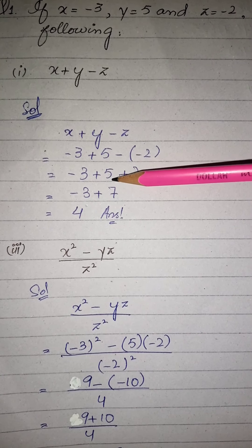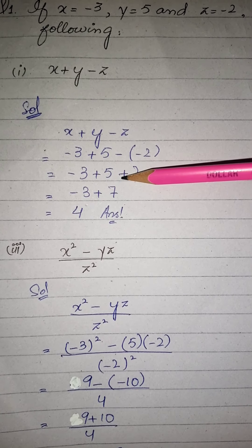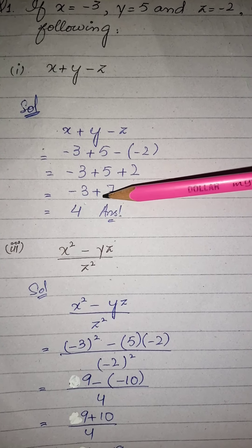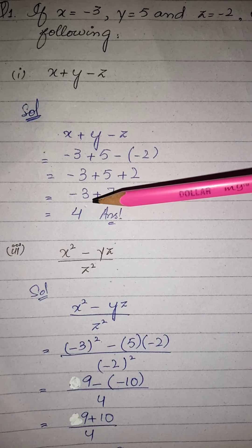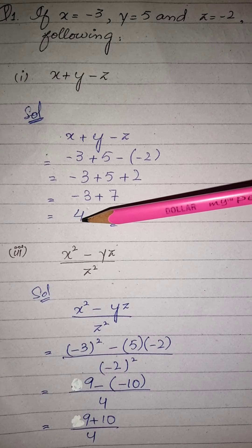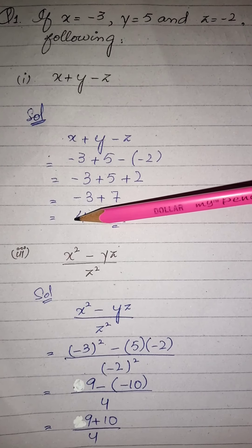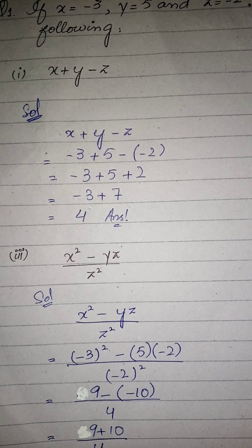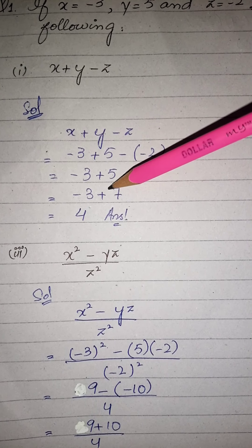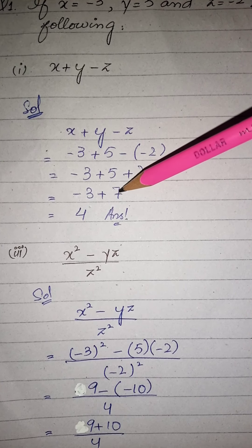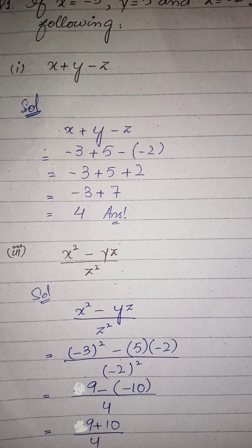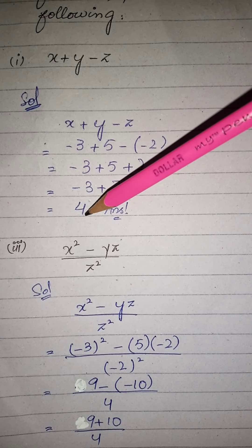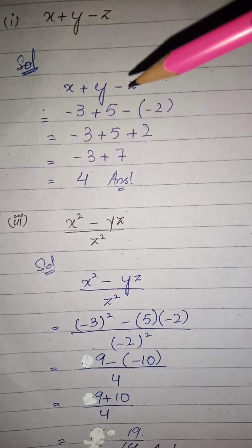اب minus 3 as it is، plus 5، اور minus minus plus 2 ہو گیا۔ plus 5 اور plus 2 مل کر plus 7 بنے۔ 7 minus 3 equals 4۔ بڑی value plus کی ہے اس لیے sign plus کی آئے گی جو ہم لکھتے نہیں۔ ہمارا answer ہے 4۔